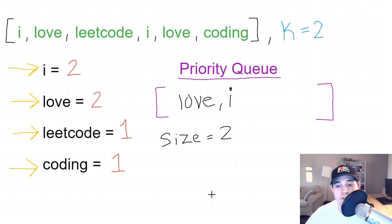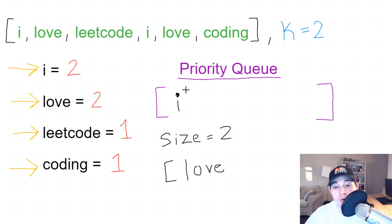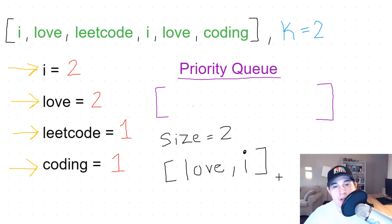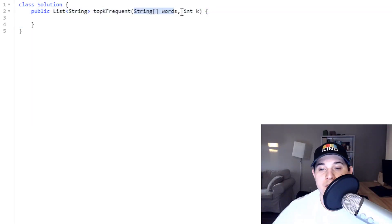We've finished iterating over all pairs and now have all our answers inside the priority queue. Since our size is two and we want k equals two elements, we just pull from the priority queue until it's empty, appending to a list. First we remove 'love' and add it to the array, then we pull 'i'. But notice this array is backwards — 'love' isn't supposed to come before 'i' — so once we remove all elements we reverse the list, giving us our final answer.